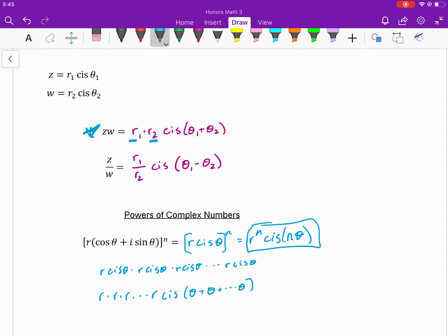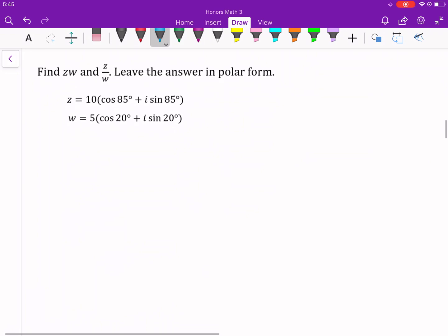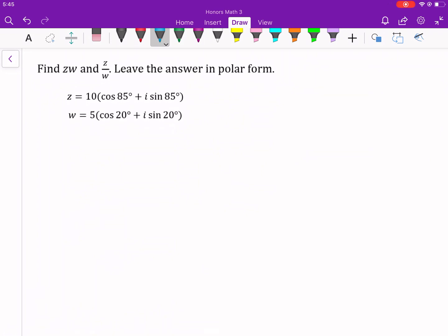So let's go ahead and use these on a few problems. So we've got this first one, z times w, and then z over w, and we've got the two z's. So I'm going to use shorthand for all these. So z times w is going to be the same thing as the radiuses multiplied together, so 10 times 5. And then I'm going to add the angles together, 85 and 20.